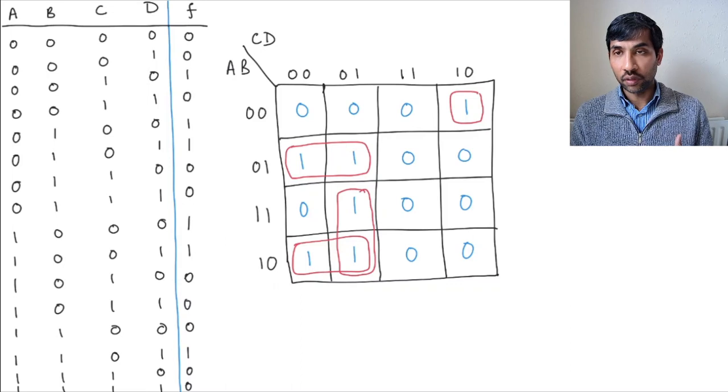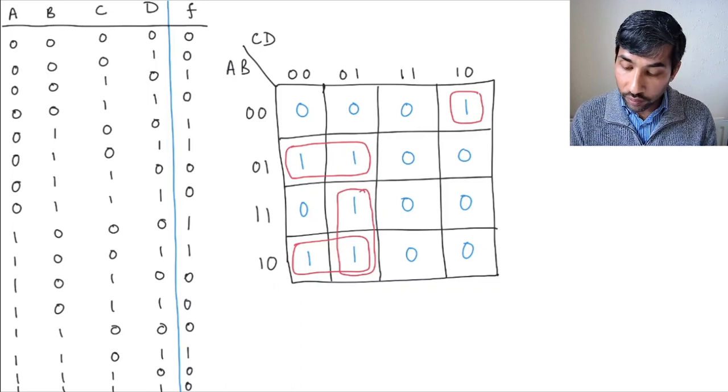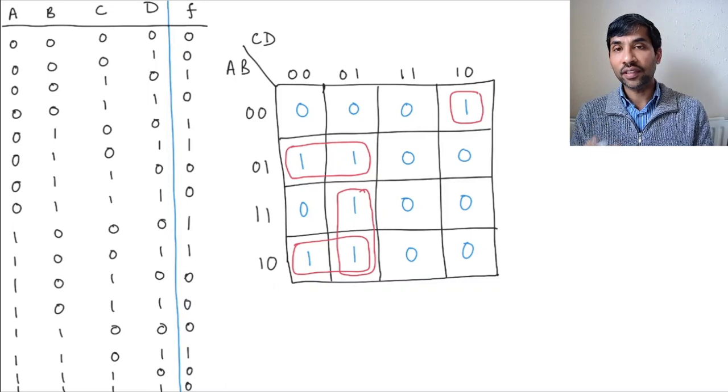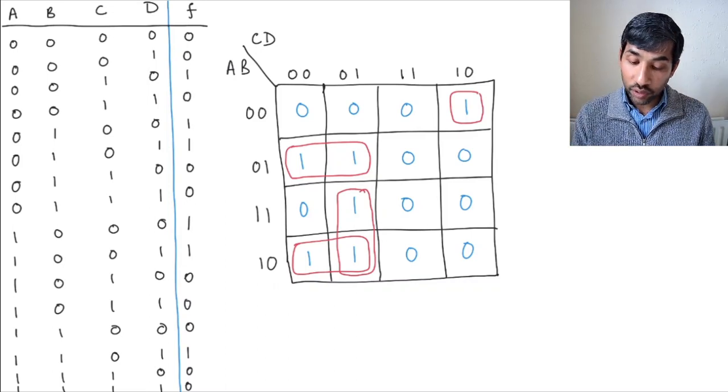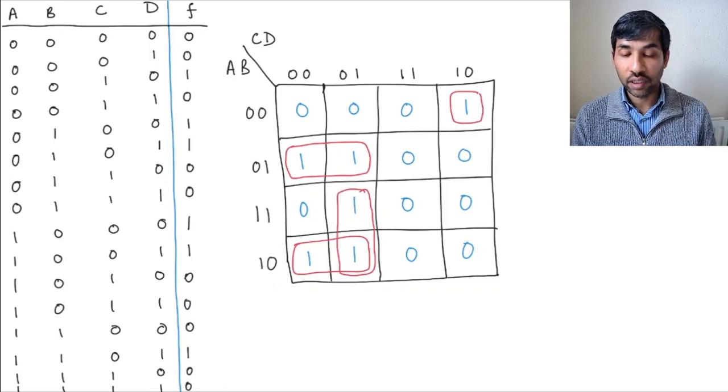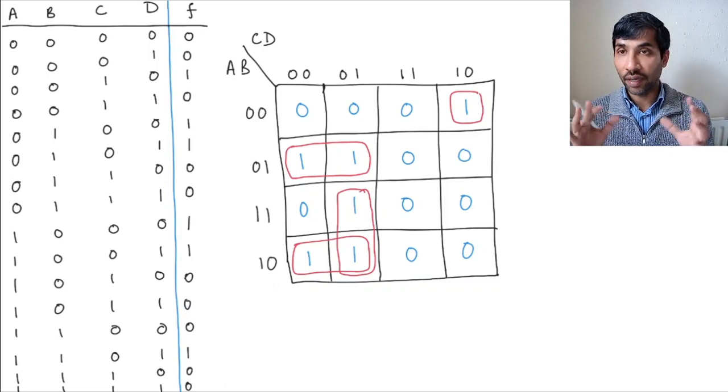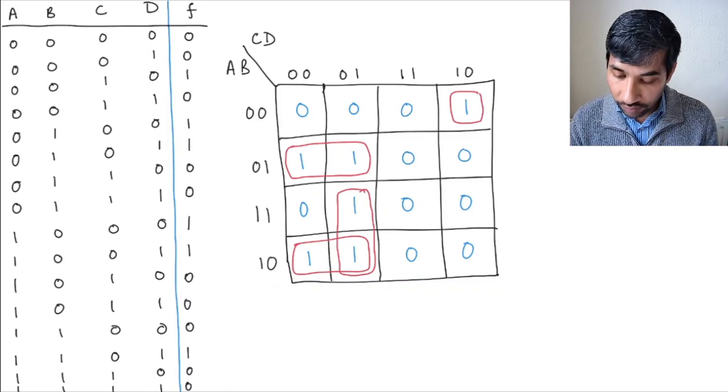But don't do it both. You don't want this one, this one to be grouped with this one and this one as well. Because then you would just get an extra term for nothing, because all the ones in the K-map are already covered by groups. So we can just leave it here.